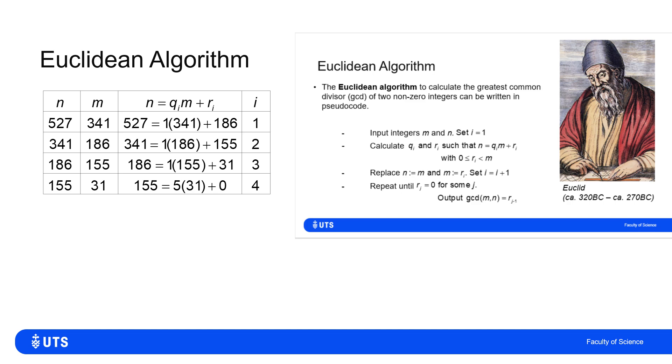Now when I work out the greatest common divisor of 155 and 31, I get 155 is 5 lots of 31 with no remainder at all.